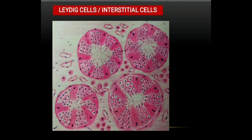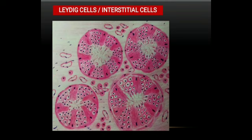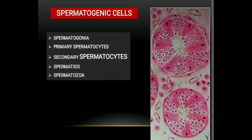The next variety of cells are called interstitial cells, also known as Leydig cells or interstitial cells of Leydig. These are larger cells, rounded or polyhedral in shape, and they lie in the connective tissue present between the seminiferous tubules. Their nuclei are eccentrically placed. These Leydig cells secrete the male sex hormone — testicular androgens — so they are endocrine in function.